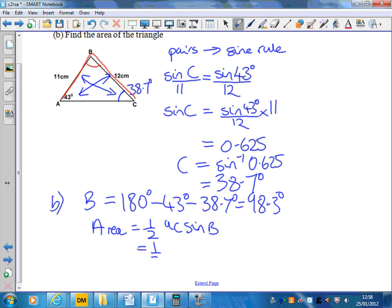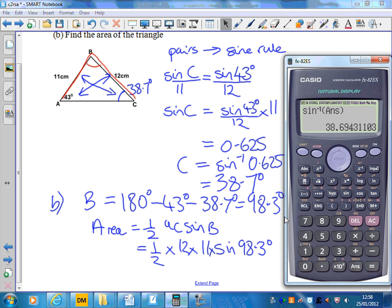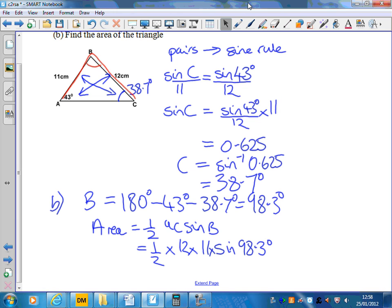So that's a half times A is 12 times 11 times sine of 98.3 degrees. I'll just type that into my calculator. So I've got half times 12 times 11 sine 98.3, so the area is 65.3 centimeters squared.